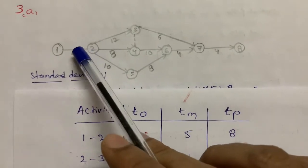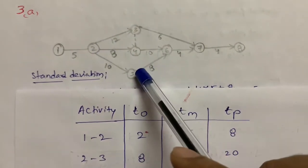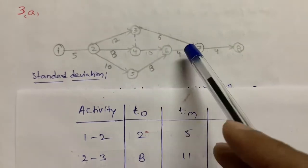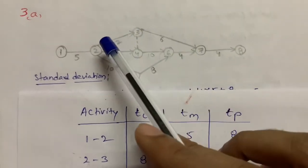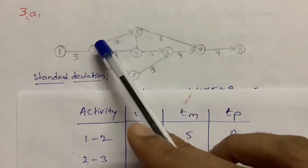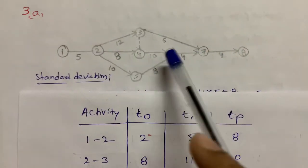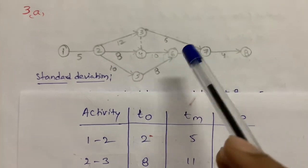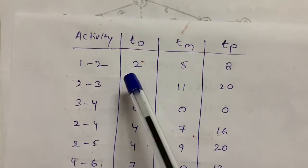1 to 2 is the preceding activity for these 3 activities. For 3 to 7, this is the preceding activity. The forward is a succeeding activity and backward pass is a preceding activity. After that, there are 3 time estimates given.